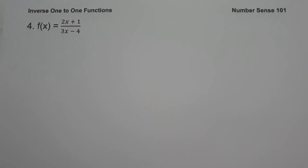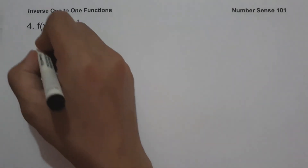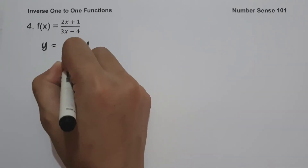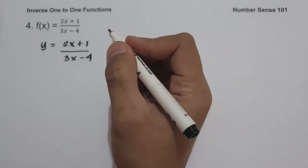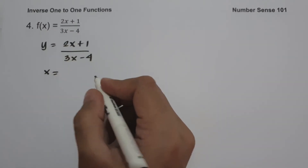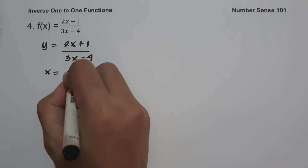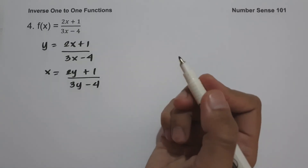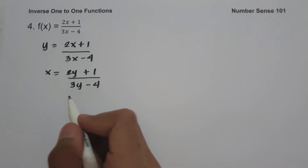On example number four, f(x) = (2x + 1)/(3x - 4). Write the function as y = (2x + 1)/(3x - 4). Interchange x and y variables, giving x = (2y + 1)/(3y - 4). Then let us solve for y in terms of x.